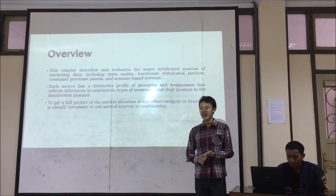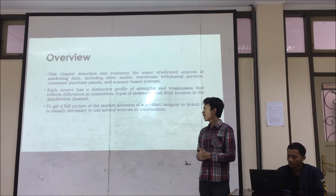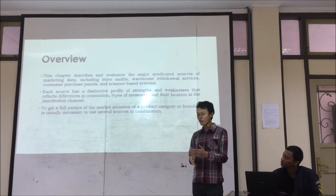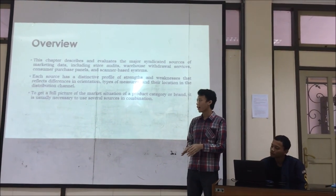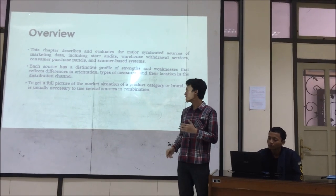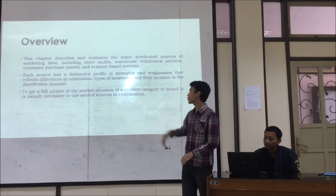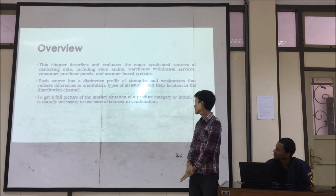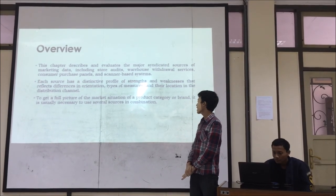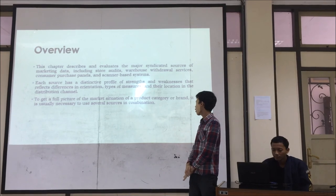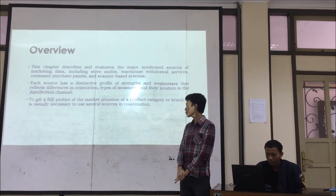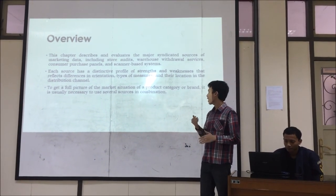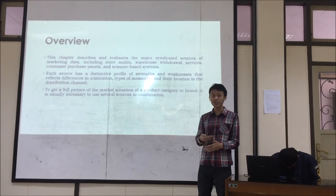Basically, this is about the system tools — how to get the information from the retailers, how the company gets the information from retailers or from the consumer itself using these tools. In this chapter we are going to evaluate these tools. Each source has a distinctive profile of strengths and weaknesses that reflects differences in orientation, types of features, and their location in the distribution channel. So we are going to show you about their strengths and also their weaknesses.